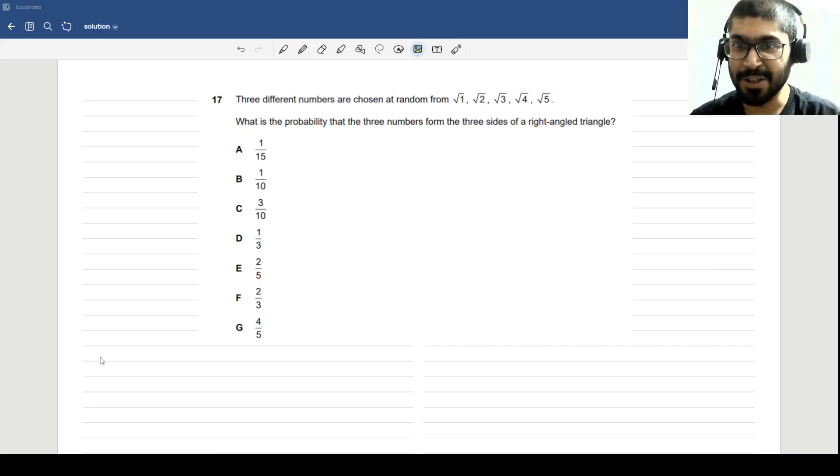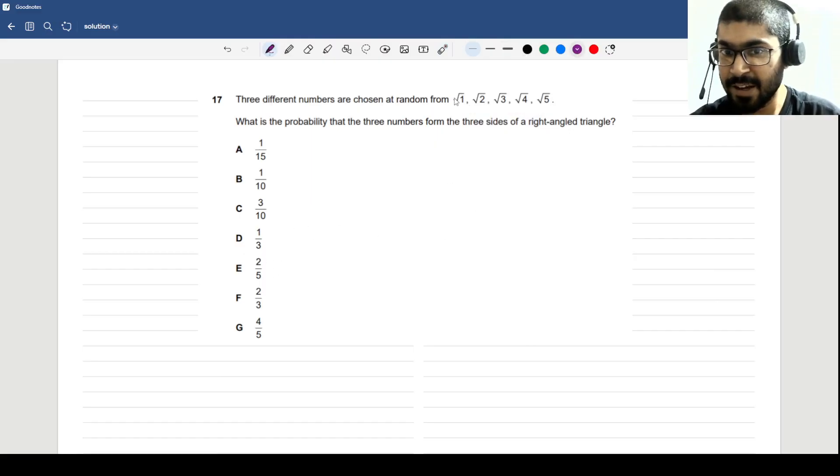This particular question caught my eye as I was browsing through the papers. This question uses elements of combinatorics as well as basic probability and some concepts of geometry. Let us look into it. This question says three different numbers are chosen at random from √1, √2, √3, √4 and √5.